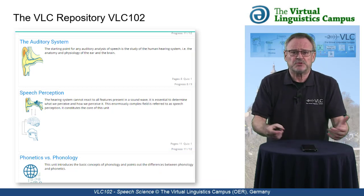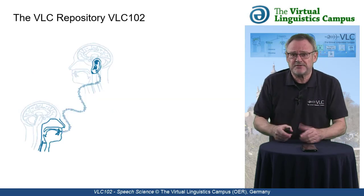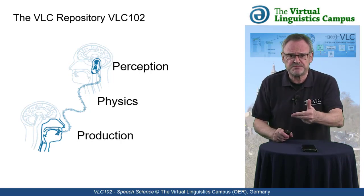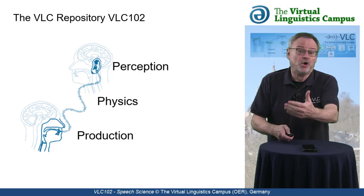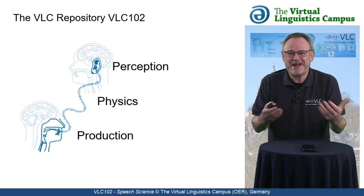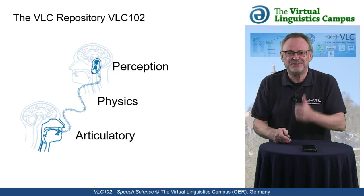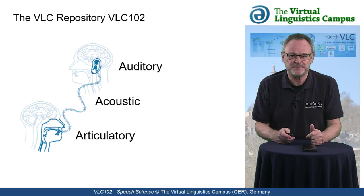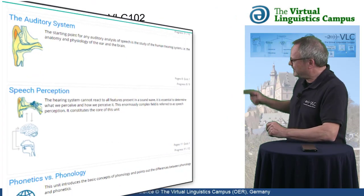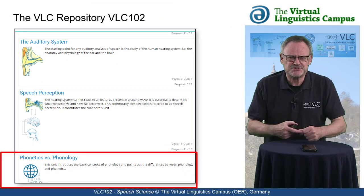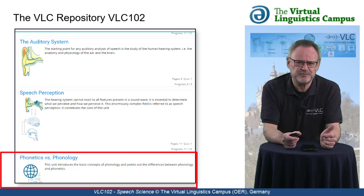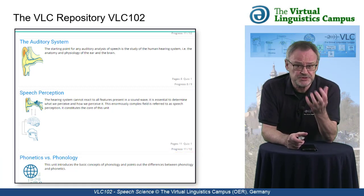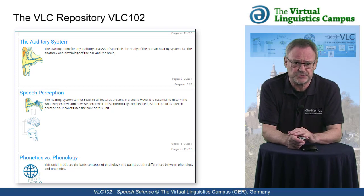VLC 102 is thus arranged alongside the three P's — production, physics, perception — or if you wish, along the three A's: articulatory, acoustic, and auditory phonetics. By the way, the final unit serves as a transition from phonetics to phonology, where the latter constitutes an additional VLC repository. This list of units is being updated and quality assured on a regular basis.